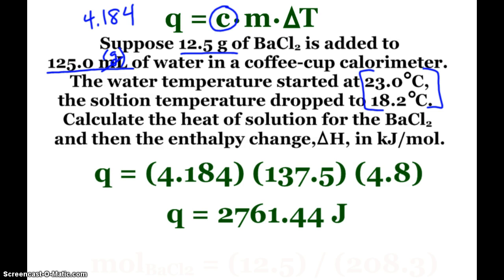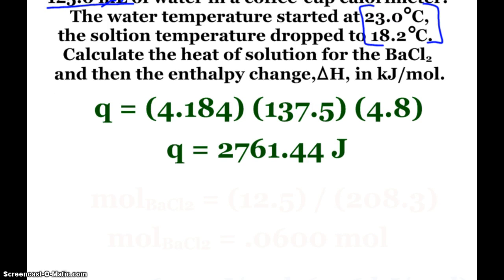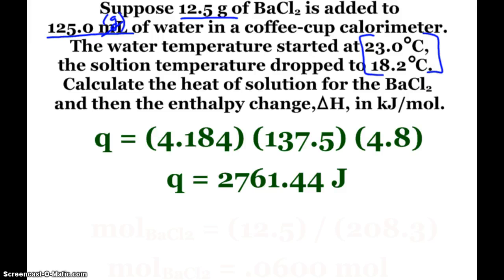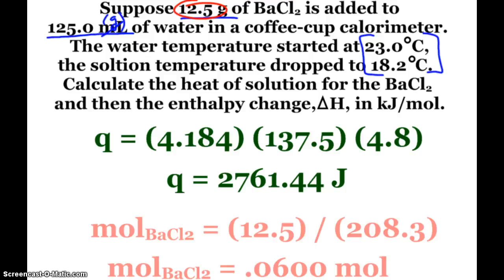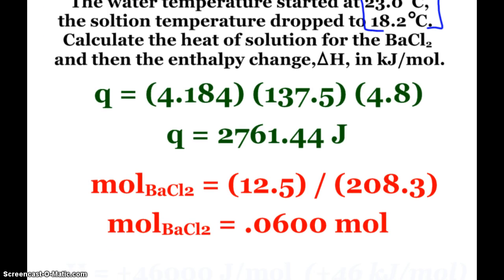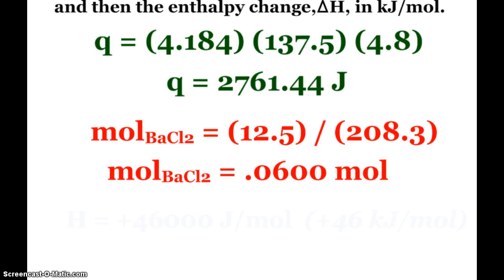And then my delta T again will just be the change in temperature. So 4.184 for my specific heat of water, 137.5 is my mass of the solution, and then my change in temperature, 23 down to 18.2, is 4.8 degrees. So that's my heat of solution. You can of course use this proper sig figs, you could say 2800 joules, but since we're going to keep using this number, I'm not going to round yet. Because I want to find the enthalpy change in kilojoules per mole. So what I need to know is the moles of barium chloride. Since I know the mass, I can easily find the moles. So the mass divided by the molar mass will tell me how many moles of barium chloride that I dissolved.